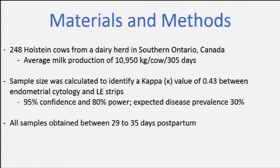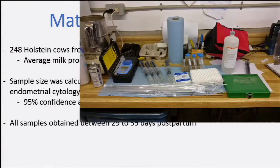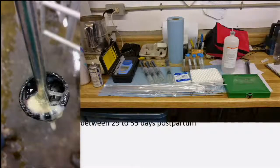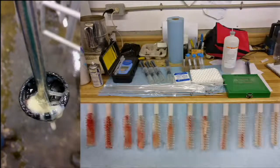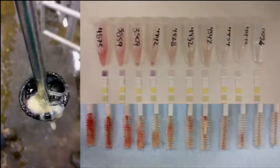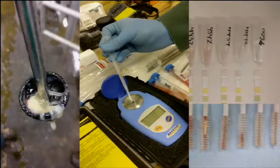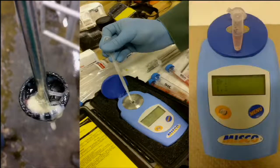We visited the farm once per week, between 21 and 35 days in milk. We prepared all the material in advance so that when we were at the farm, everything was ready to not lose any time. First, we did a metri-check and evaluated the discharge of the cow. Then we took cytobrush samples. We also performed the leucocyte esterase strip test on the farm, and measured the Brix refractometer reading on the farm as well — for example, one sample read 1.3.